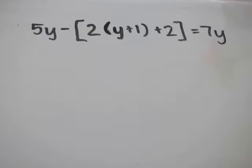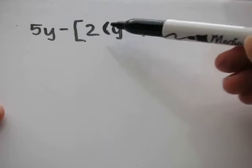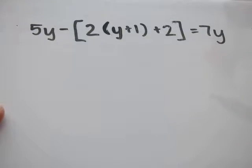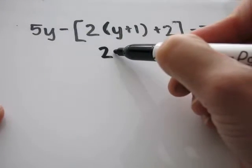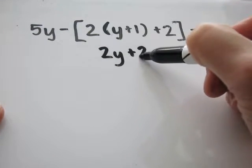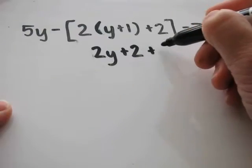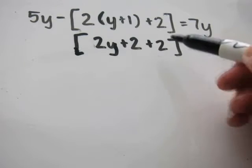Problem 24. 5y minus 2 times y plus 1 plus 2 equals 7y. Start off by getting rid of the innermost parentheses first and working towards the outer brackets. 2 times y is 2y. 2 times 1 is 2. That's plus 2. That's what's in our bracket. 2 plus 2 is 4.